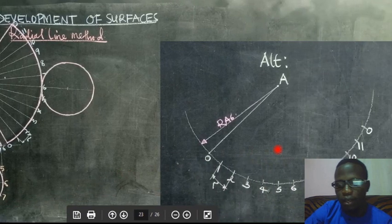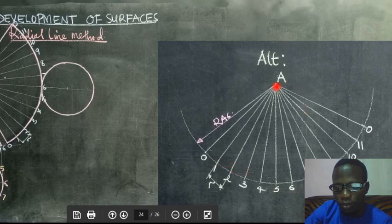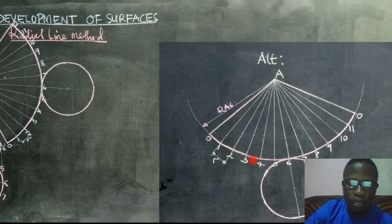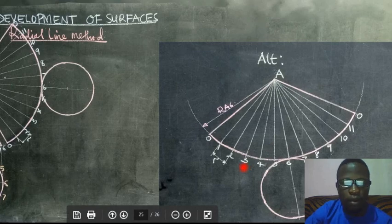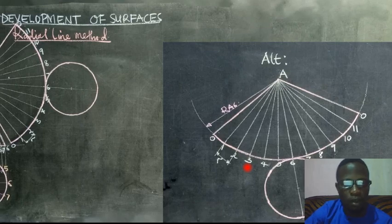Now after that we also join our lines from now the apex to the point you've created on the curve and when you outline you get the development of the cone itself and that is how we obtain or we make the development of the cone when it's not cut.